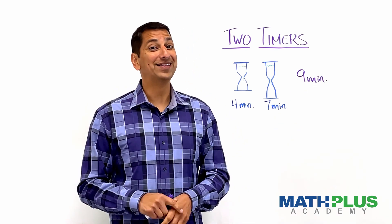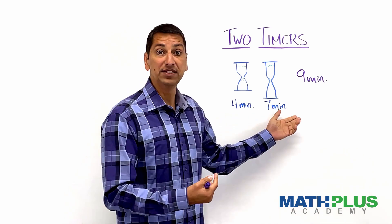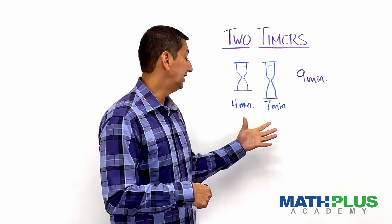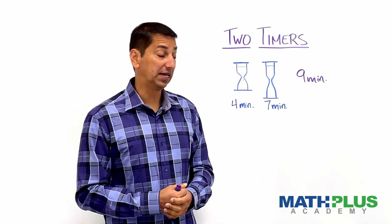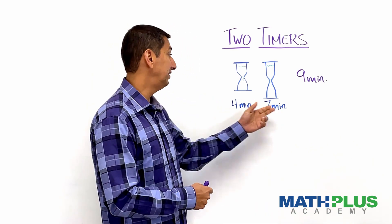If you figure that out, then another extension is change these. What about a three-minute timer and a seven-minute timer? Now what can you do and what can't you do? What about a five-minute timer and a seven-minute timer? What about a five and an eight?